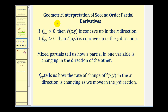Let's talk about the geometric interpretation of the second order partial derivatives — sometimes written as f_xx and f_yy. If f_xx is greater than zero, the function is concave up in the x direction; if negative, it's concave down. If f_yy is positive, f(x,y) is concave up in the y direction, and if negative, concave down. In general, mixed partials tell us how a partial in one variable is changing in the direction of the other. So f_xy tells us how the rate of change of f(x,y) in the x direction is changing as we move in the y direction.